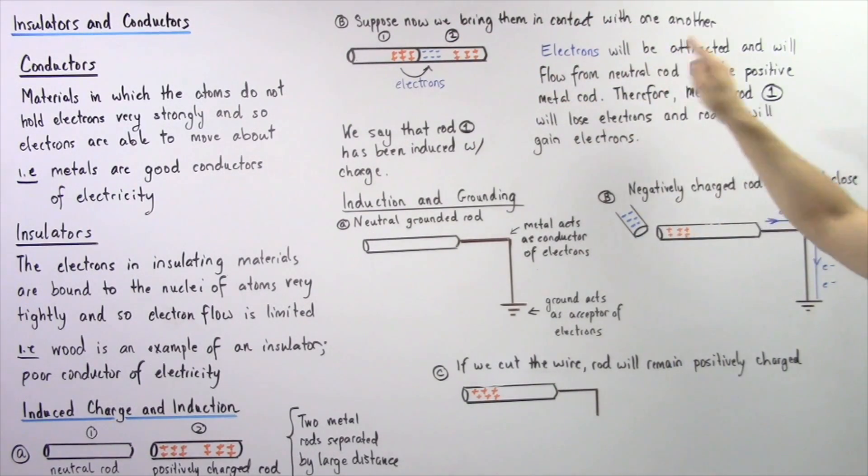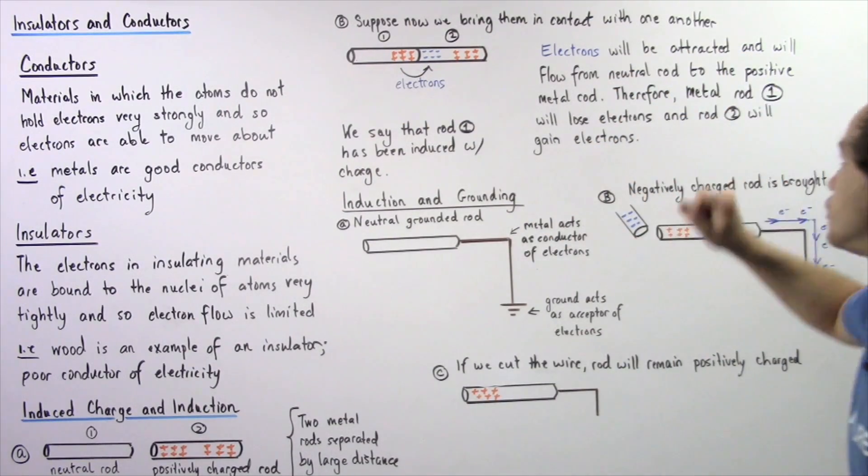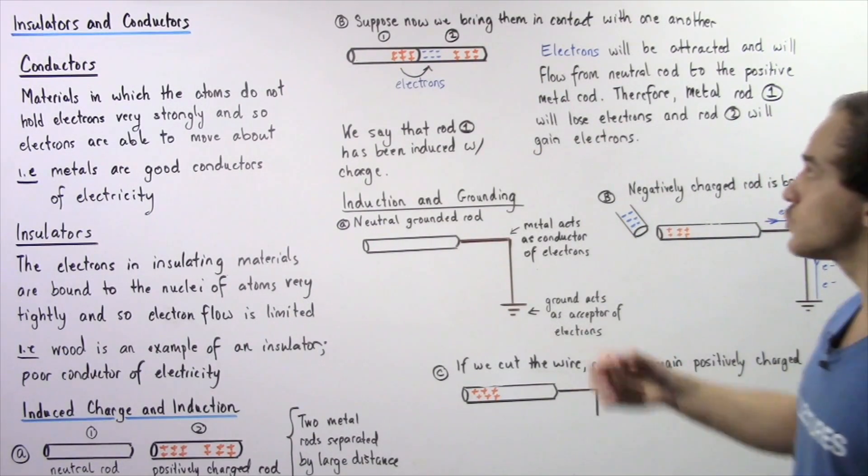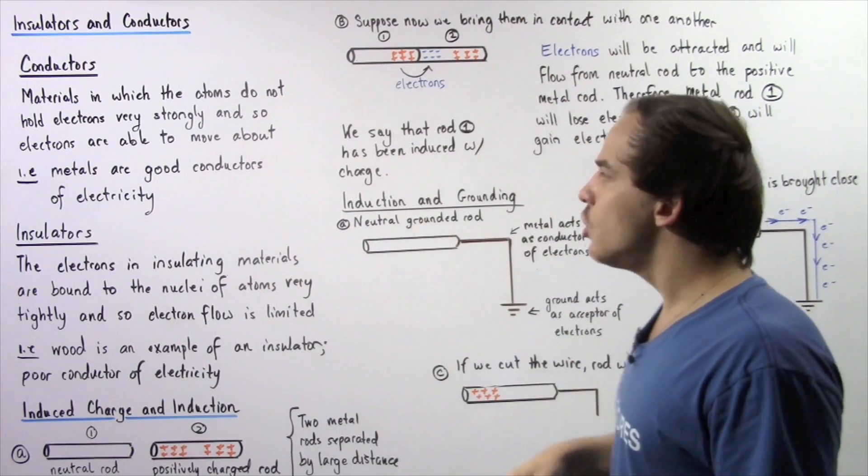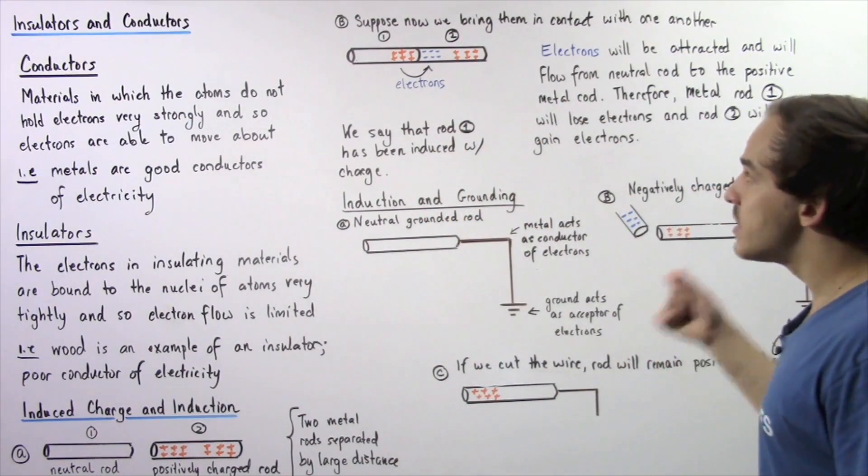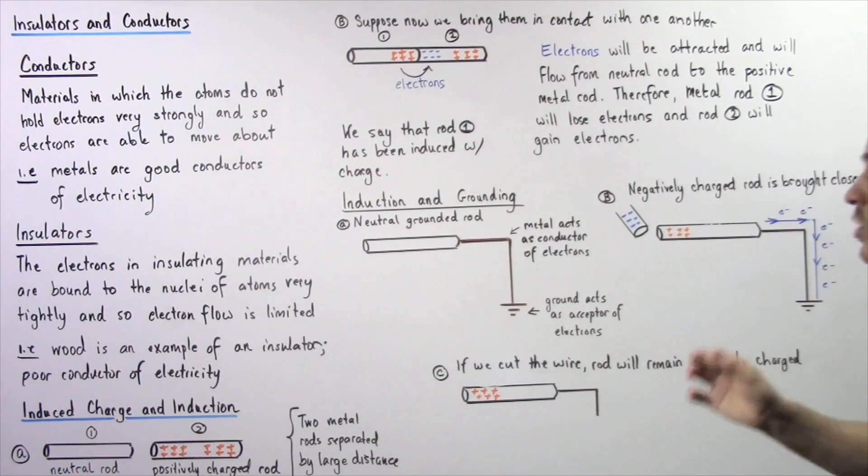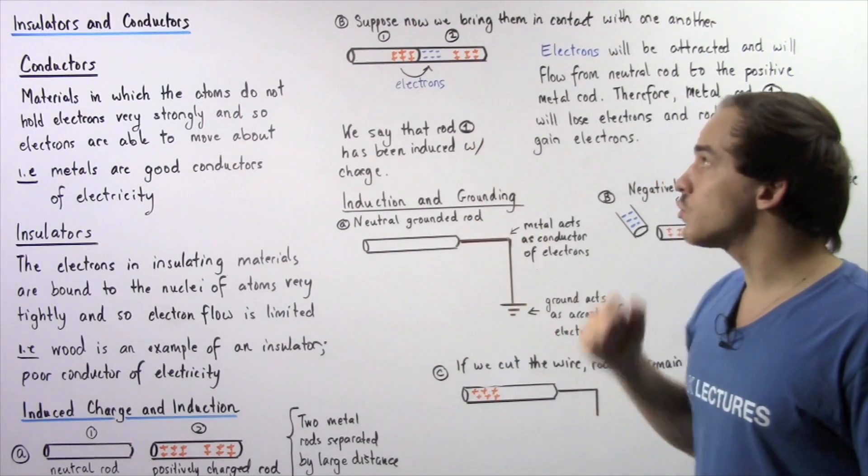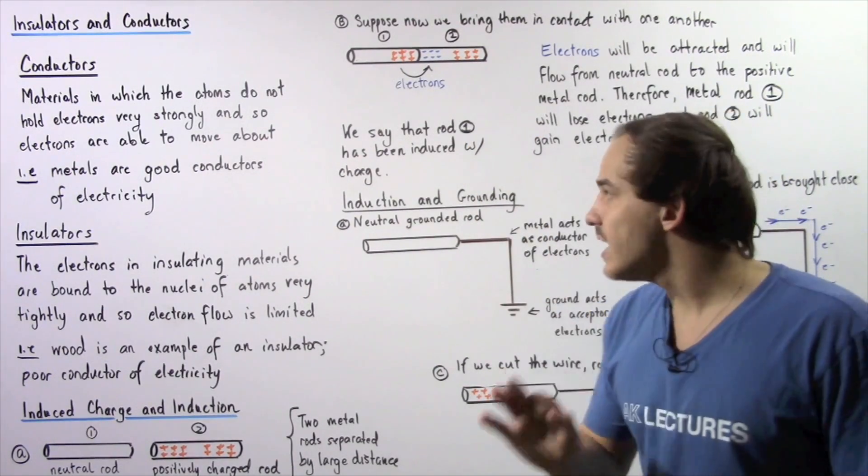Electrons will be attracted and will flow from the neutral rod, rod number one, to the positively charged rod, rod number two. Therefore, metal rod number one will lose electrons and rod number two will gain those electrons. So we say that rod number one has been induced with a charge, and this process of charging our rod is known as induction.